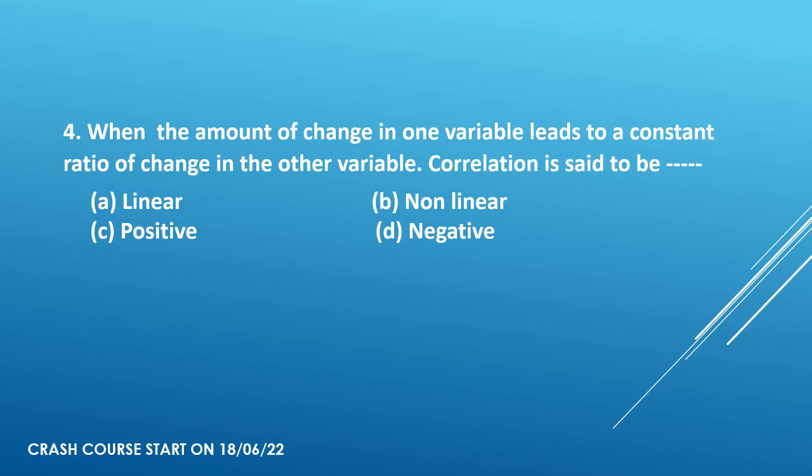Fourth question: When the amount of change in one variable leads to a constant ratio of change in the other variable, correlation is said to be. Options: linear, non-linear, positive, negative. The answer is linear. The amount of change in one variable leads to a constant ratio of change in the other variable, correlation is said to be linear.